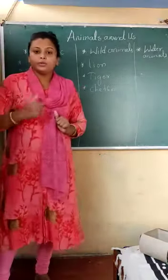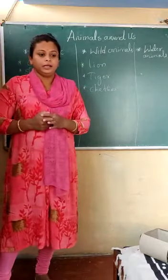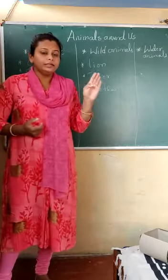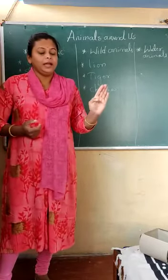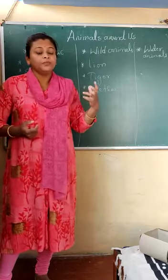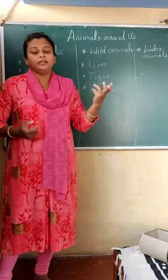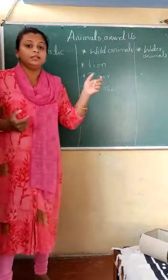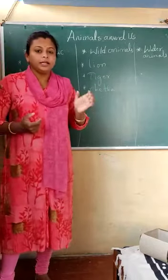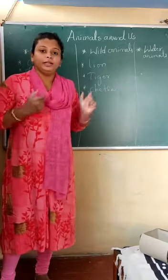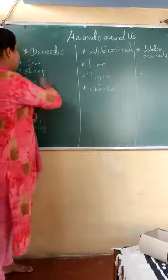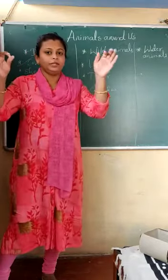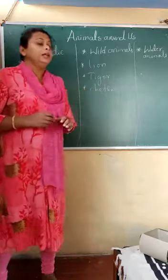Let's discuss domestic animals one by one. The cow is going to help us in our life — the cow gives us milk, and by using that milk we can get many more products. Along with that, it gives us dung, which is used as manure for our fields. We should provide the cow food and shelter.